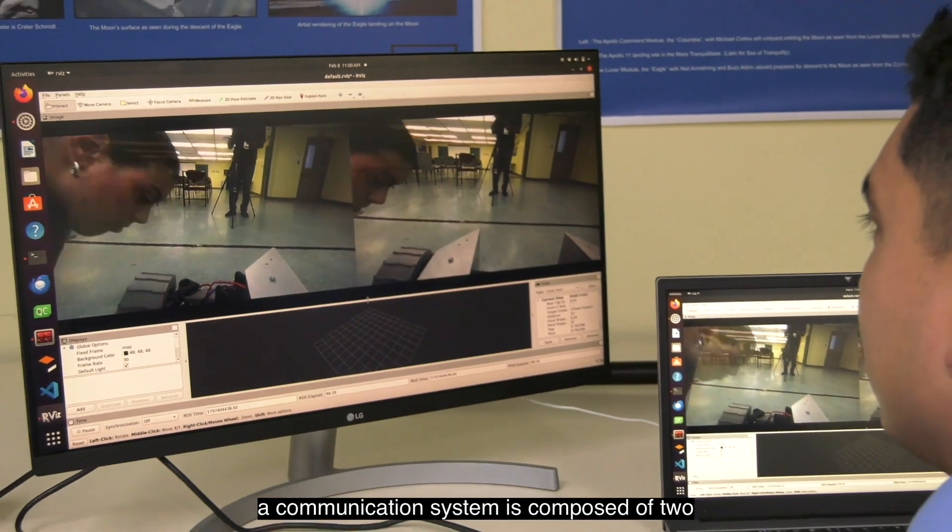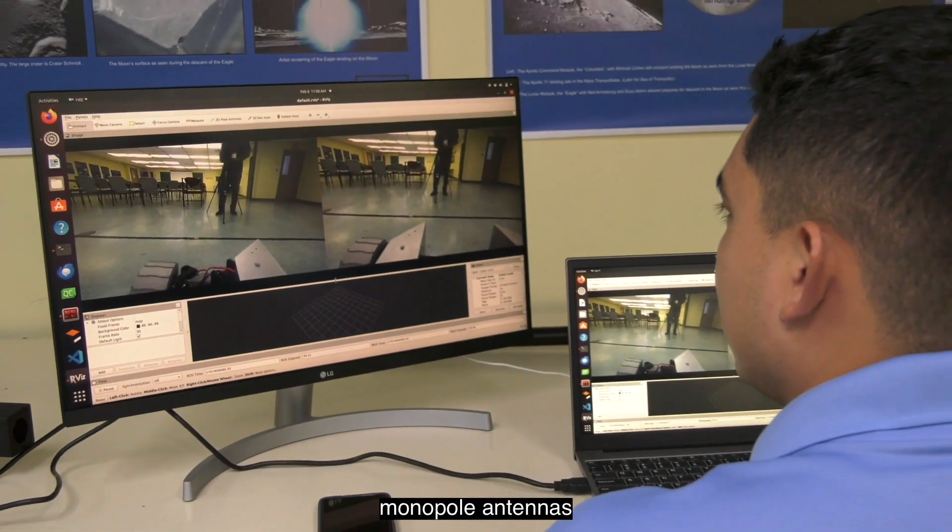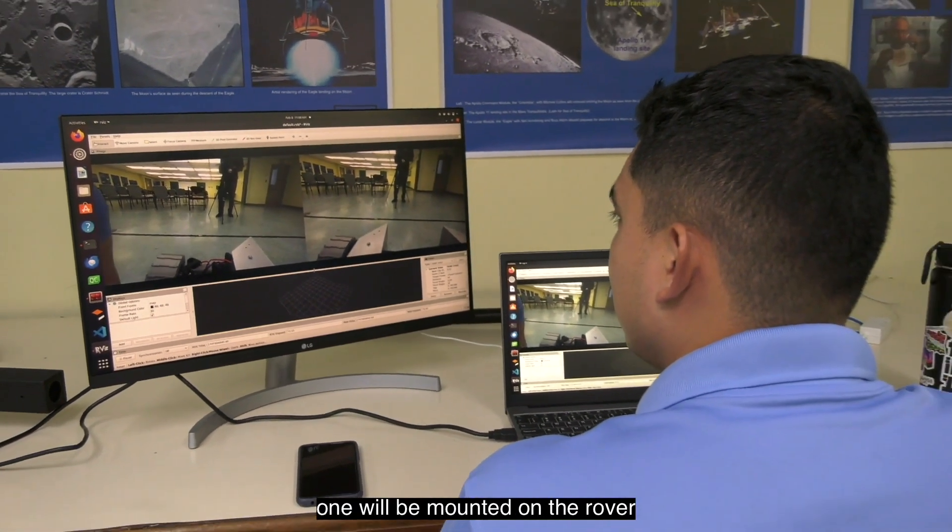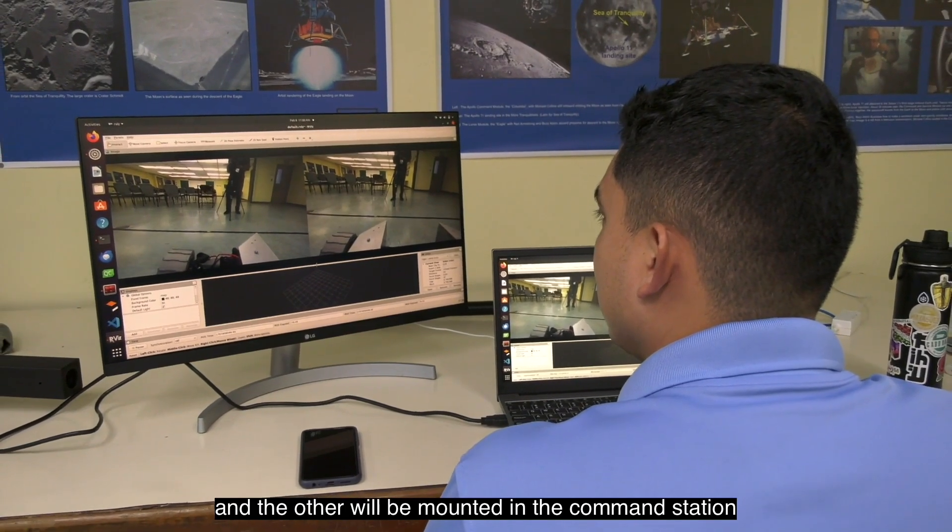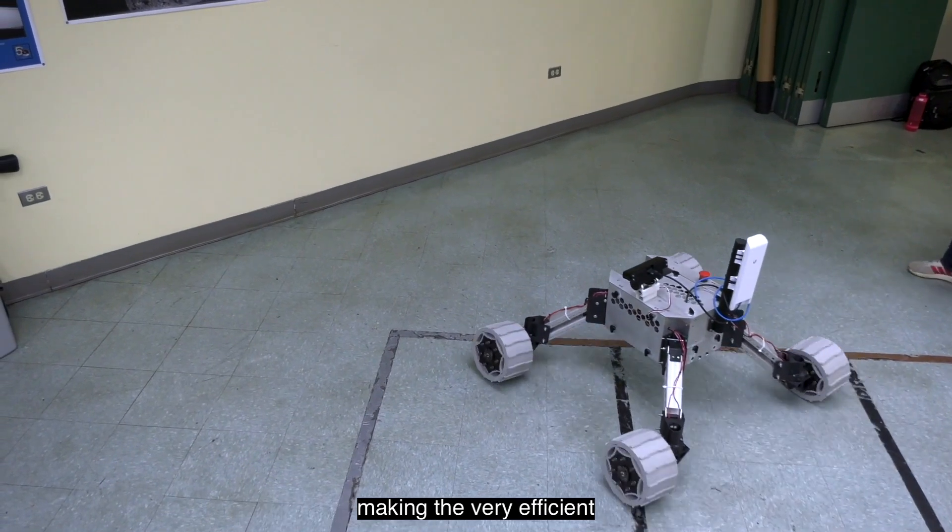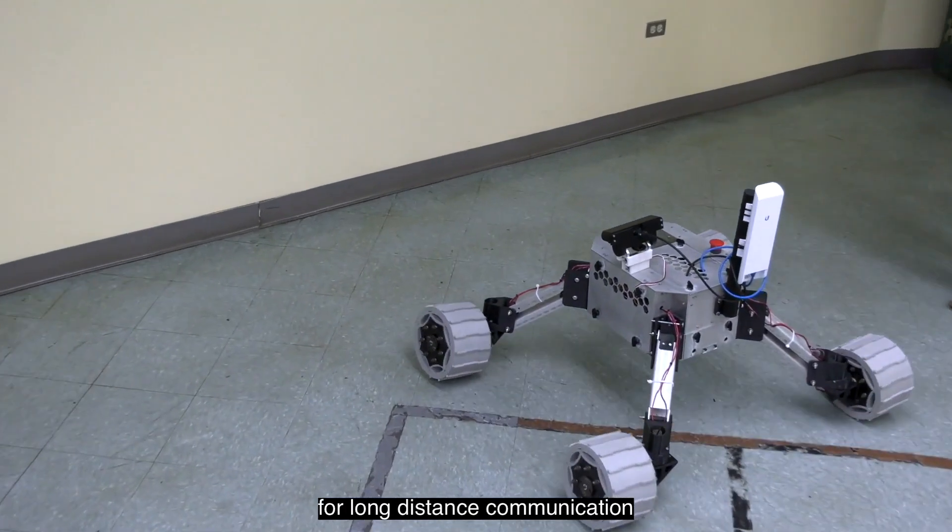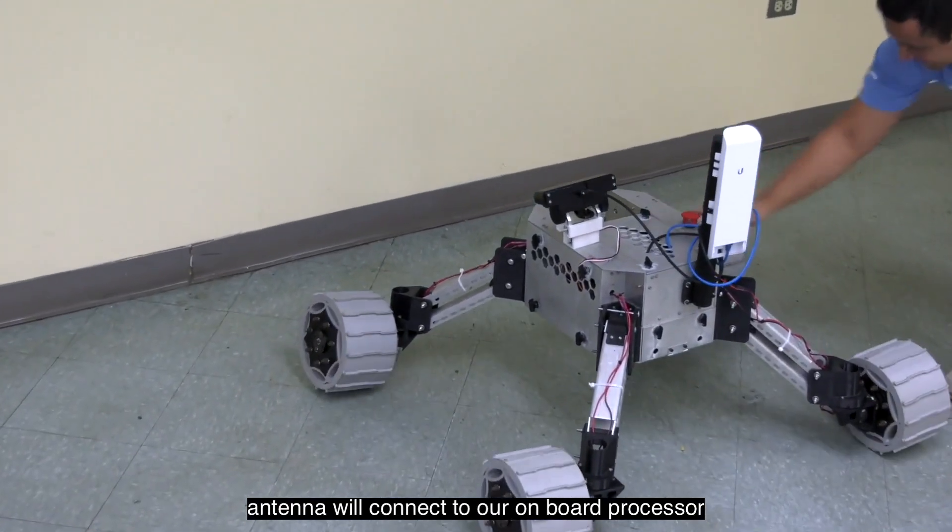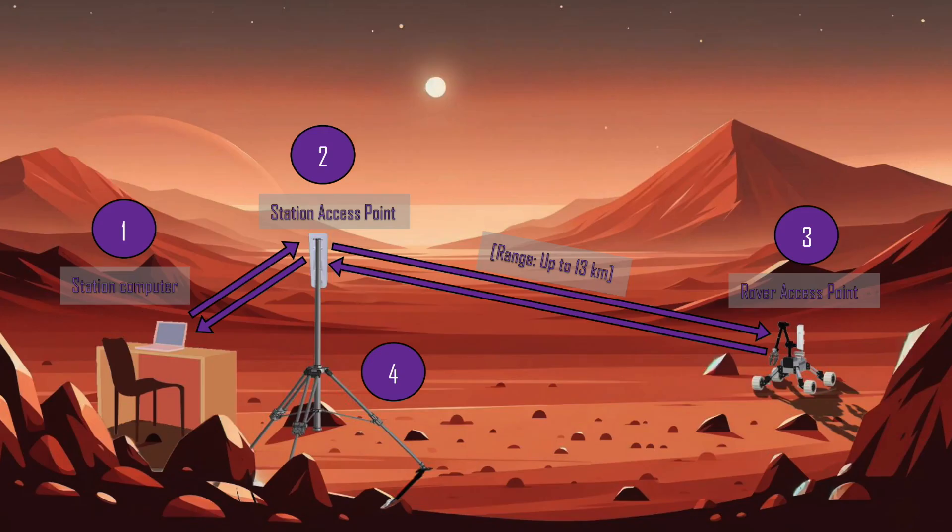Our communication system is composed of two ubiquity nanostation monopole antennas, one will be mounted on the rover and the other will be mounted in the command station. These antennas are high range radio transceivers making them very efficient for long distance communication, in which the rover antenna will connect to our onboard processor, the Jetson Orin, and will be the avenue to provide all the information needed for remote navigation and controls.